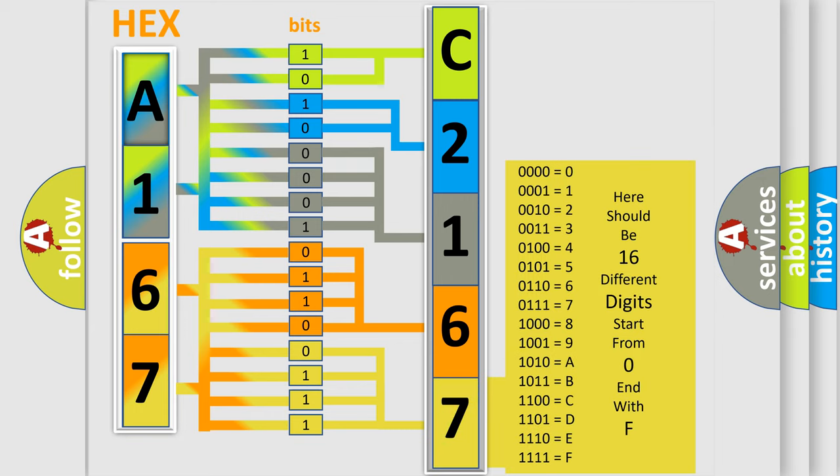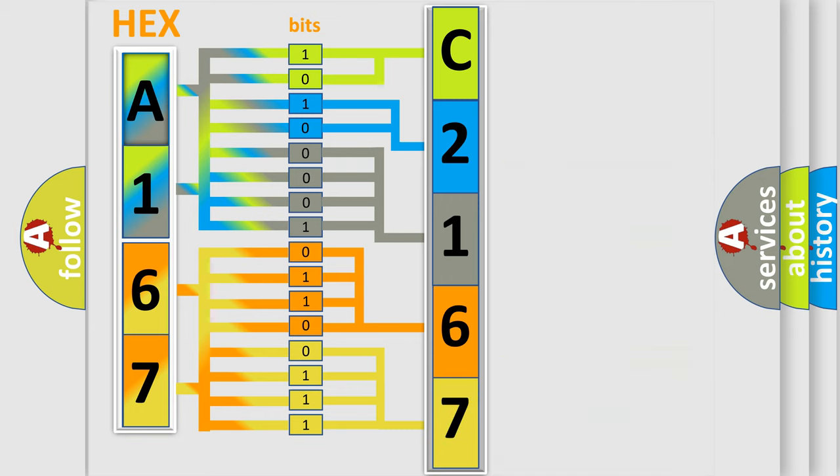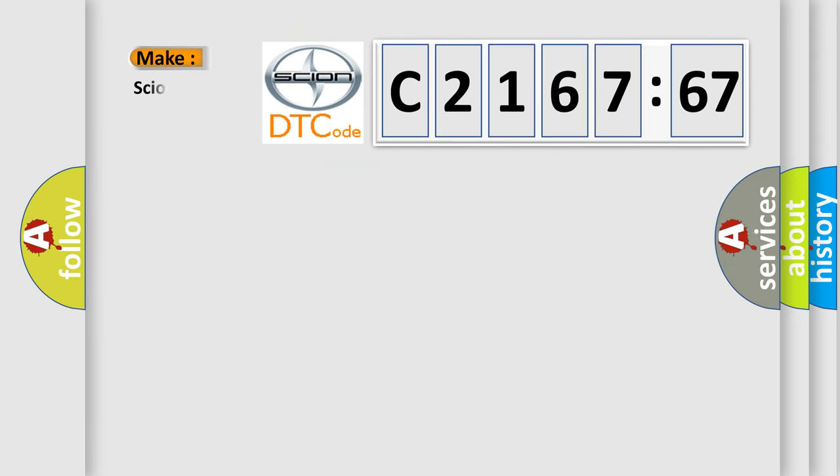A single byte conceals 256 possible combinations. We now know in what way the diagnostic tool translates the received information into a more comprehensible format. The number itself does not make sense to us if we cannot assign information about what it actually expresses.